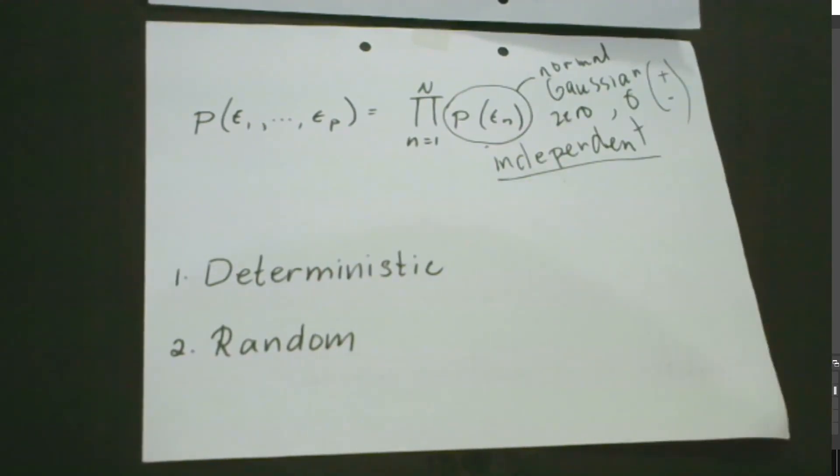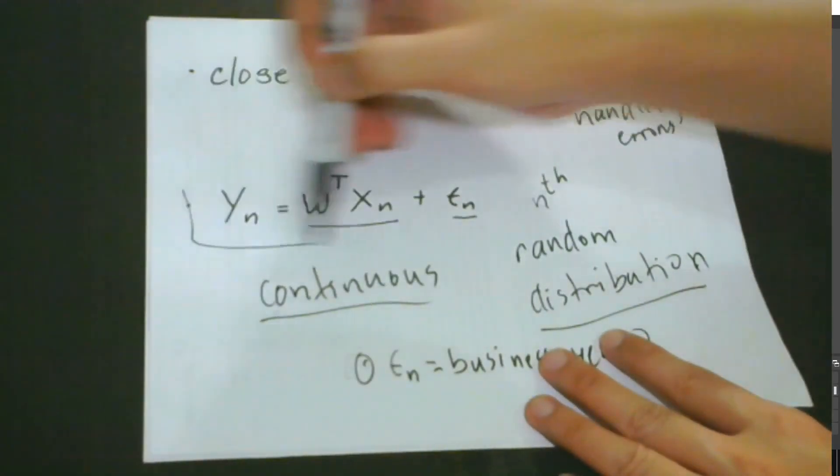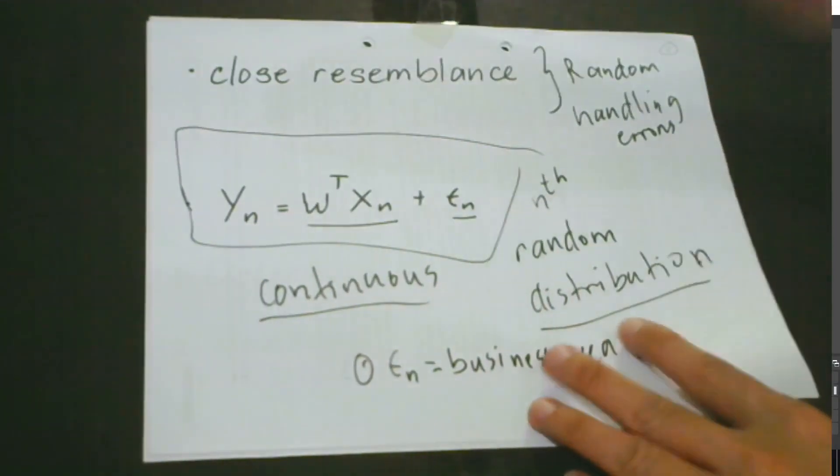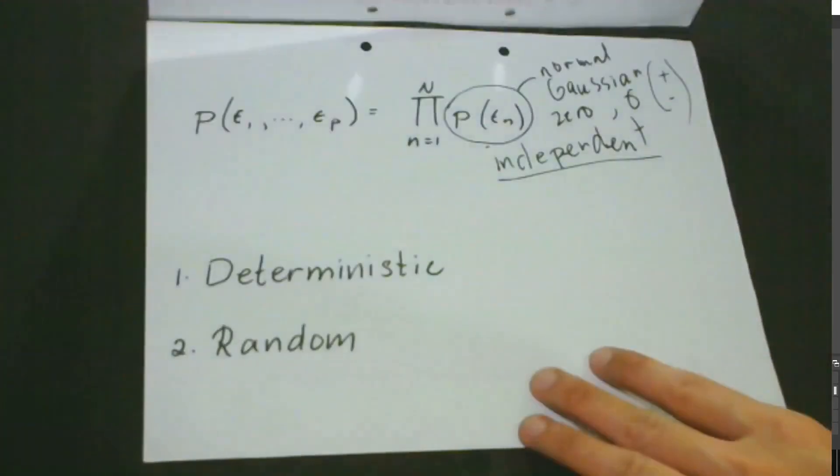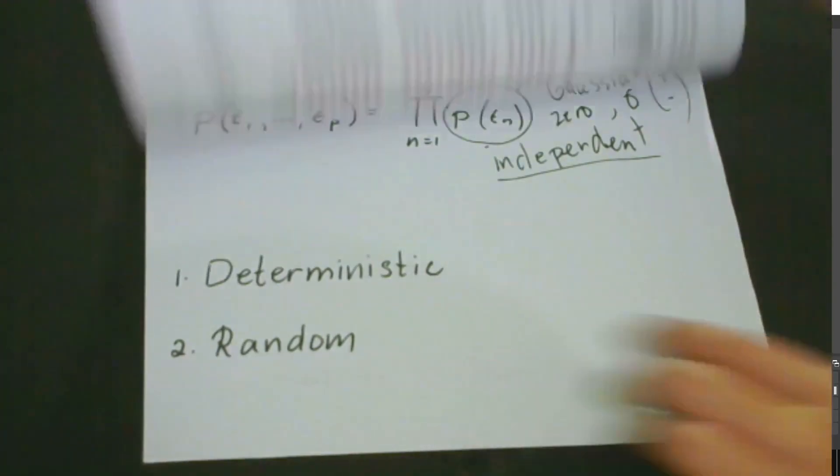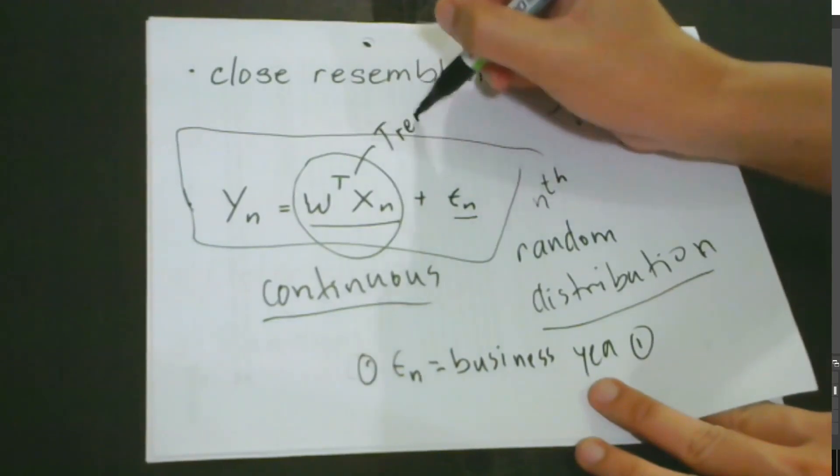Examining our model, we could see that it has two parts. If we're going to examine this, we could see that it has two parts. The first part is this, obviously. This is actually the deterministic component, and this is the trend.